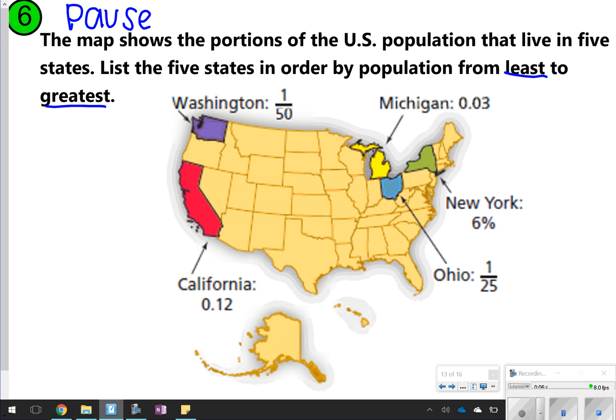All right, so what I went and did is I just ordered them all into percentages. I know Michigan will be 3%. California will be 12%. Those are really easy. Washington, an easy way that you can get this percentage is just to make it equal to 100. 50 times 2 is 100, so 1 times 2 gives me my percentage. So Washington has 2%. And then Ohio, kind of the same thing here. 1/25, so I know 25 can go into 100 times 4. So Ohio would be 4%.